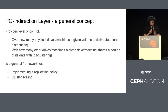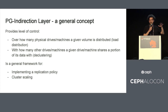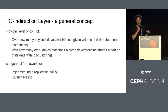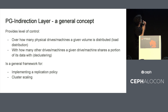My point is that the PG indirection layer is a very general concept. On the one hand, it provides a level of control over data distribution — over how many physical devices a final volume is distributed. On the other hand, it provides control over declustering: how fast you can recover one failed device, and how many other machines or drives a given drive is sharing its data with. It is a very general framework for implementing a replication policy or cluster scaling.